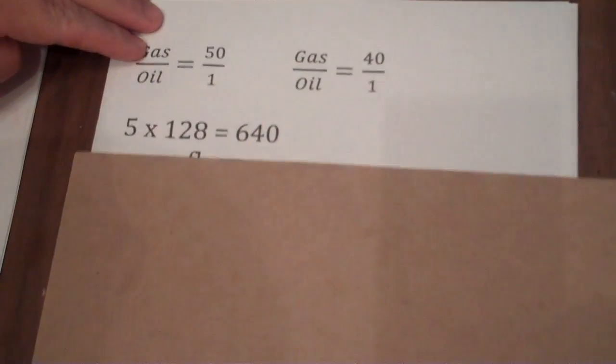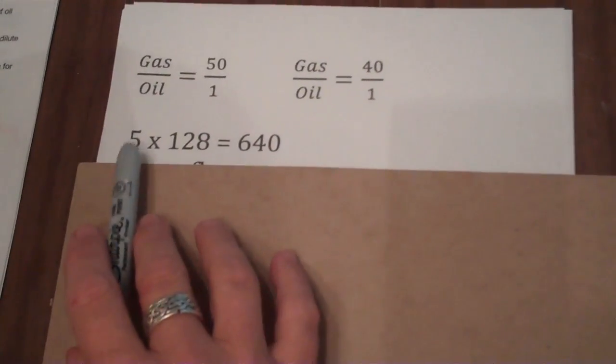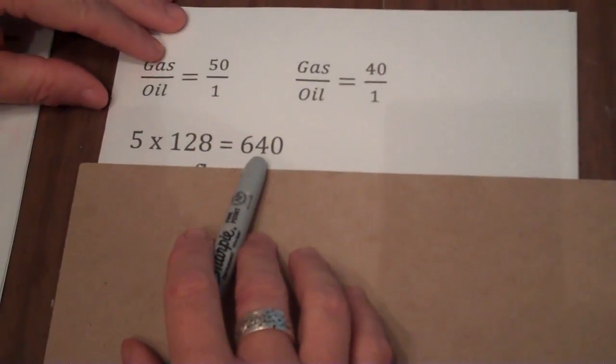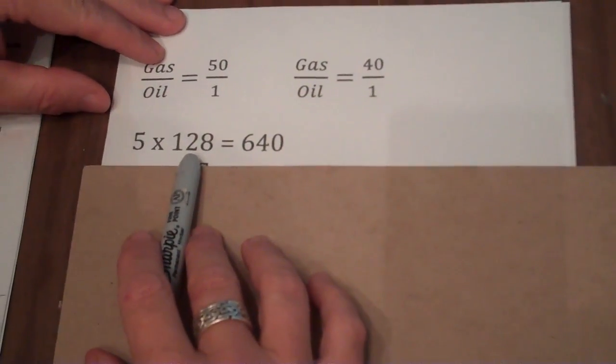Now first of all, to do that, we need to figure out everything in fluid ounces because 5 gallons of gas is actually 640 fluid ounces because there's 128 fluid ounces for every gallon.